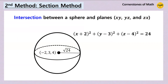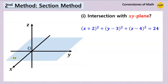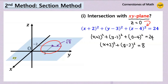The second method is what I would like to call the section method, although this method still requires some distance calculations as well. The gist of this method is to find the intersection between a sphere and a plane, which is a circle. For example, what is the intersection between the sphere and the xy-plane? The xy-plane means z equals 0. Substituting into the equation of the sphere gives x plus 2 squared plus y minus 3 squared equals 8. This means the intersection is a circle on the xy-plane with center minus 2, 3 and radius square root of 8.